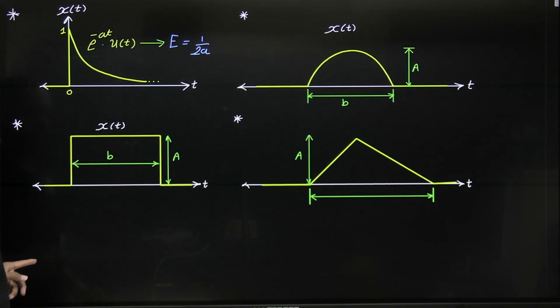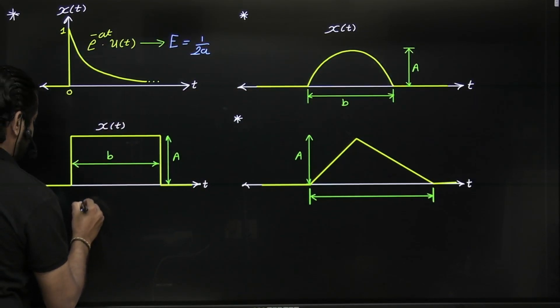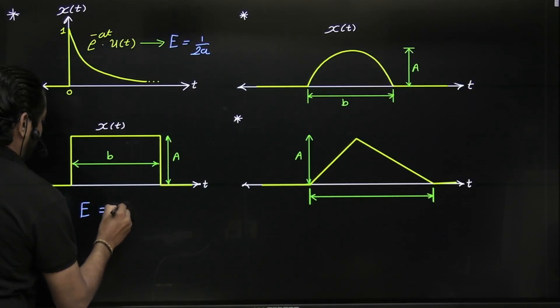If there is a rectangle pulse with width B and amplitude A, then its energy is given by A² times width B.